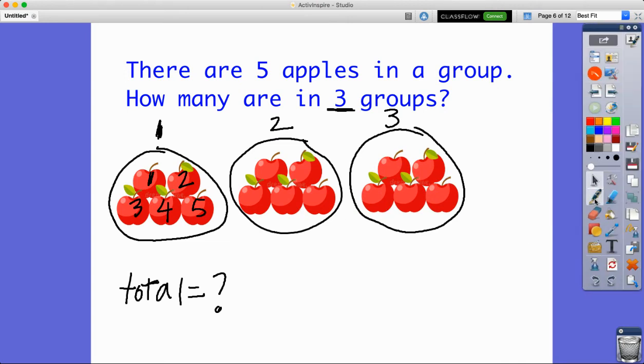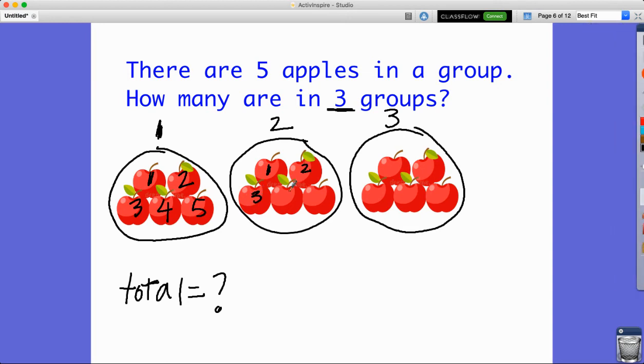Now I'm going to count up. I've got to make sure I have five in each: one, two, three, four, five - and three groups of five. That would be five, six, seven, eight, nine, ten, eleven, twelve, thirteen, fourteen, fifteen. I can also count by fives, so five plus five plus five equals 15.